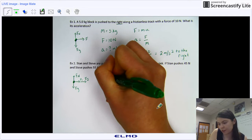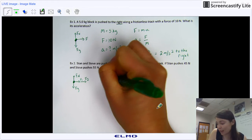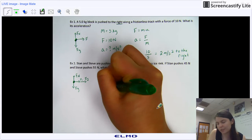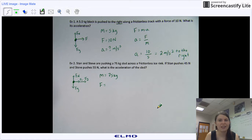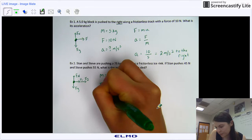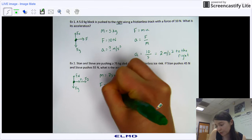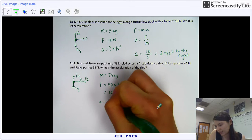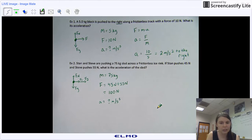So when we come down here to write our knowns and our unknowns, our mass is going to be 75 kilograms, and our force is going to be the addition of Stan and Steve pushing together. So we're going to have 45 newtons plus 55 newtons, and that's going to equal a grand total of 100 newtons. And we're still looking for acceleration, so let's go ahead and put that as our unknown, what we're looking for.